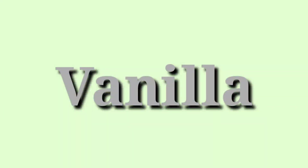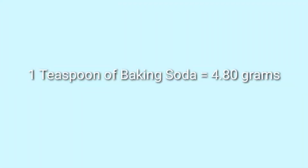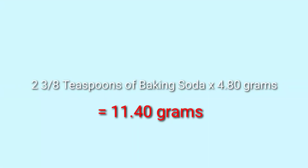Next is vanilla. To convert teaspoons of vanilla to ml: 1 teaspoon equals 5 ml. So multiply 3 and 1/2 teaspoons by 5 ml — the answer is 17.50 ml. Next is baking soda: 1 teaspoon equals 4.80 grams. Multiply 2 and 3/8 teaspoons by 4.80 grams — the answer is 11.40 grams.